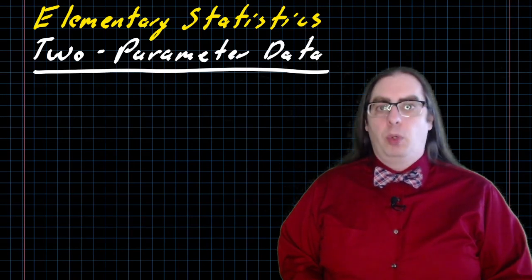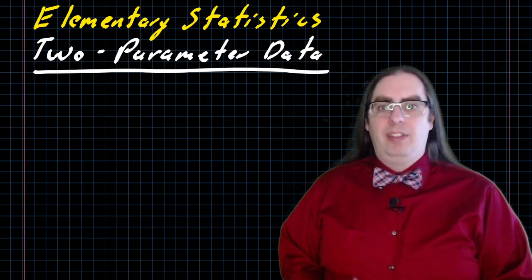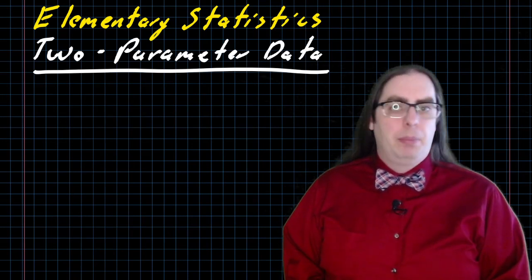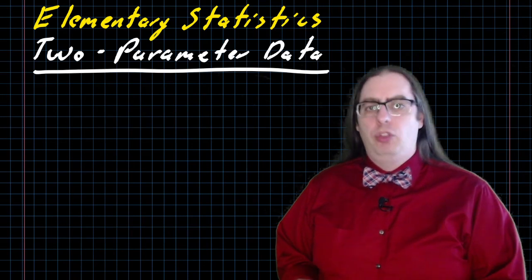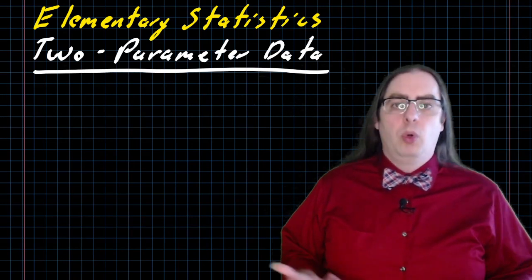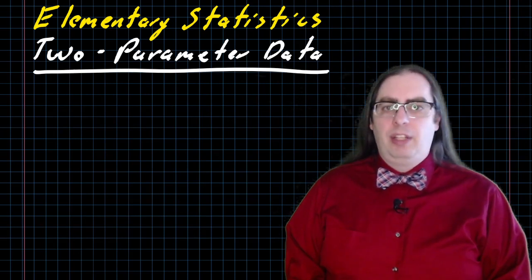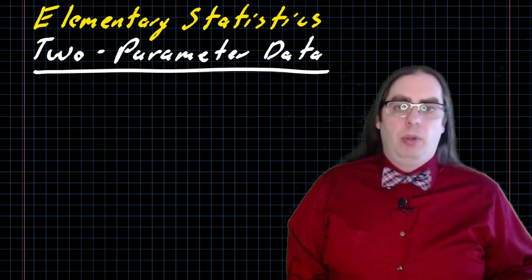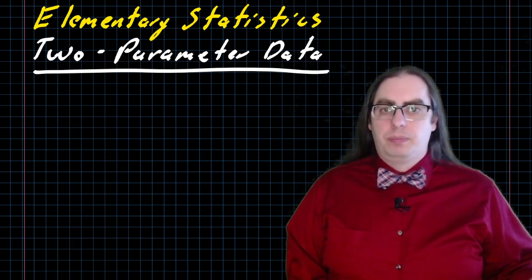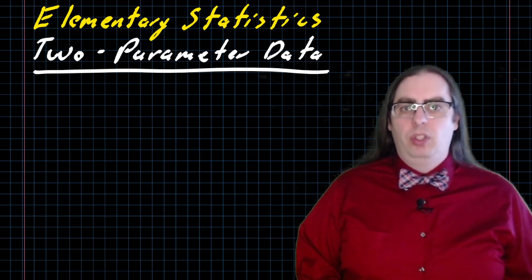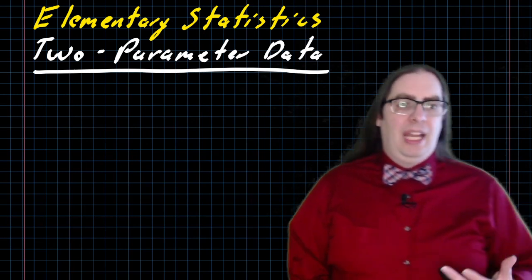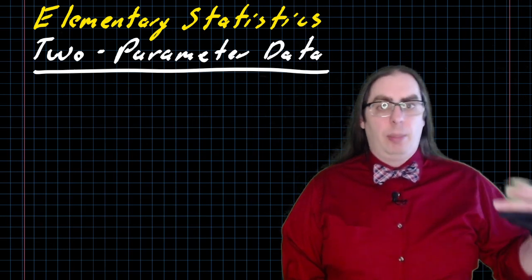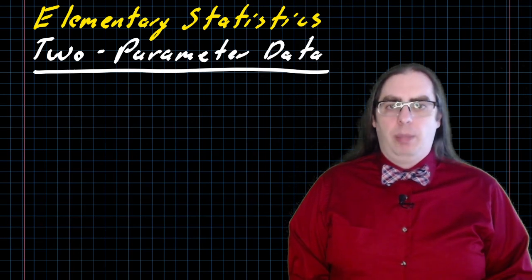That's the idea of two-parameter statistics. Instead of looking at a single measurement for each member of your sample or population, we're going to look at two, or you could do three or four or more, but two is the nice place where things turn out differently. For example, you might look at people's heights and weights. You might look at a simple laboratory experiment where you drop something, you measure the height that you drop it from, and you time how long it takes for the object to fall.